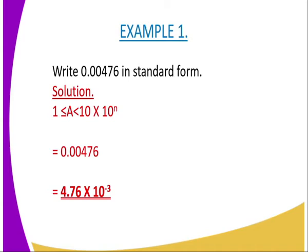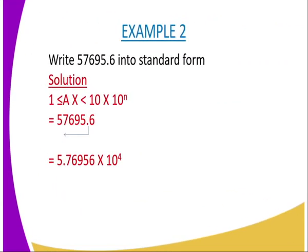We will go to example 2. You are supposed to write 557,695.6 in standard form. The decimal point must be shifted from where it is toward the left hand side.